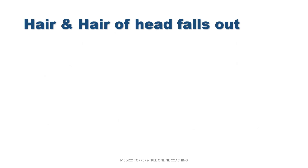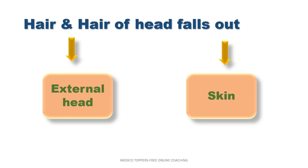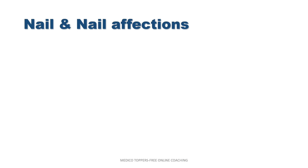Next, hair and hair of the head falls out. Hair is a part of the body, so hair is given in external head. Hair-related rubrics are given under external head. But hair of head falls out — this is a complaint — so hair of head falls out is in external head as well. Hair rubrics are given under skin.